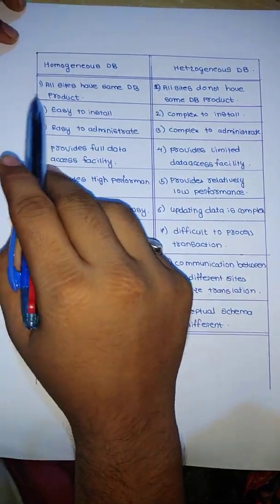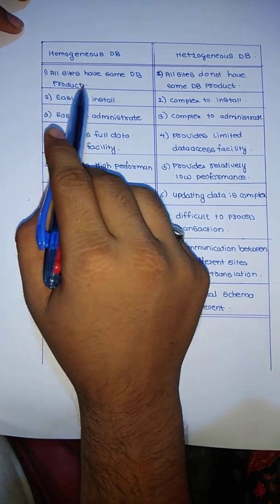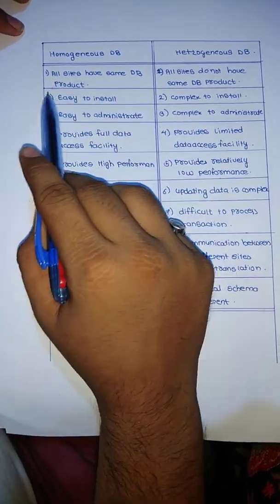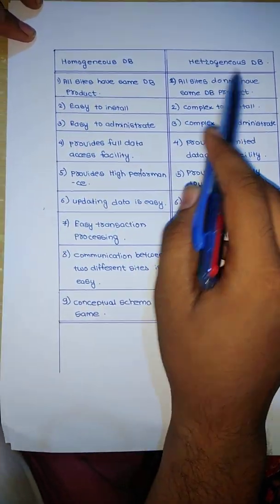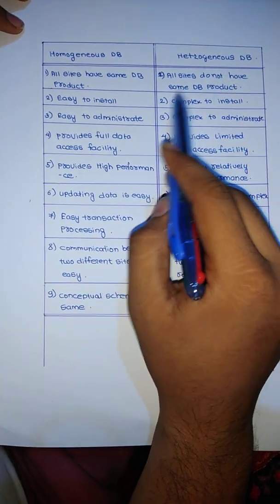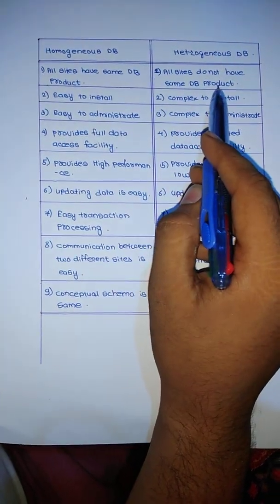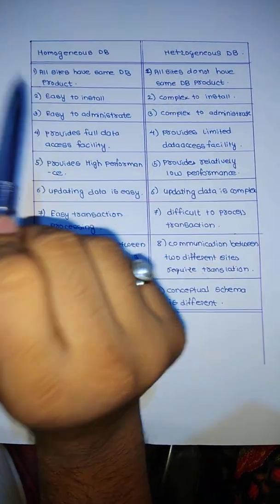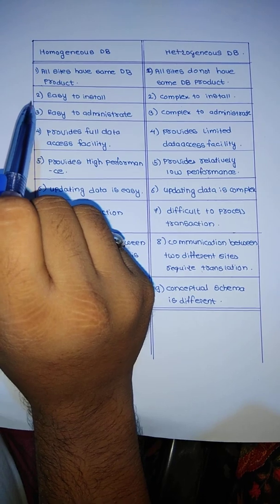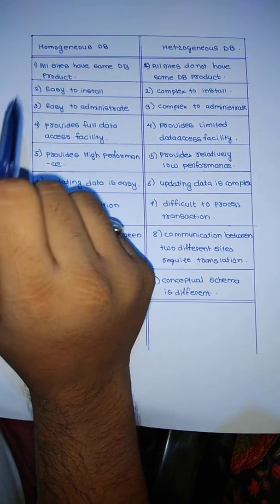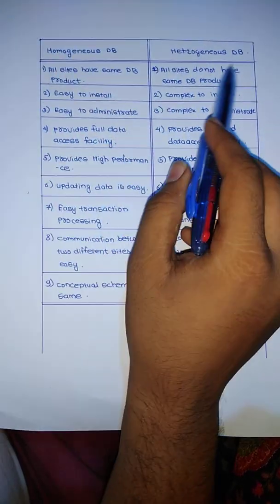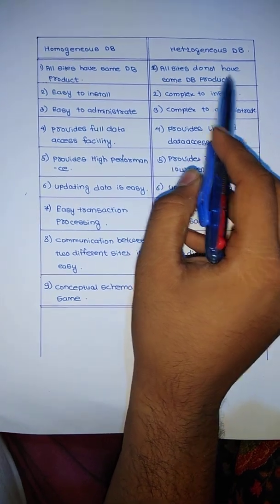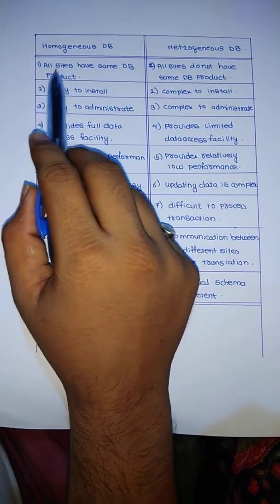First, in a homogeneous database, all sites have the same database product, while in a heterogeneous database all sites do not have the same database product. In a homogeneous database we have either SQL or Oracle — only one. But in a heterogeneous database, we can have both. So the important keyword here is database product.